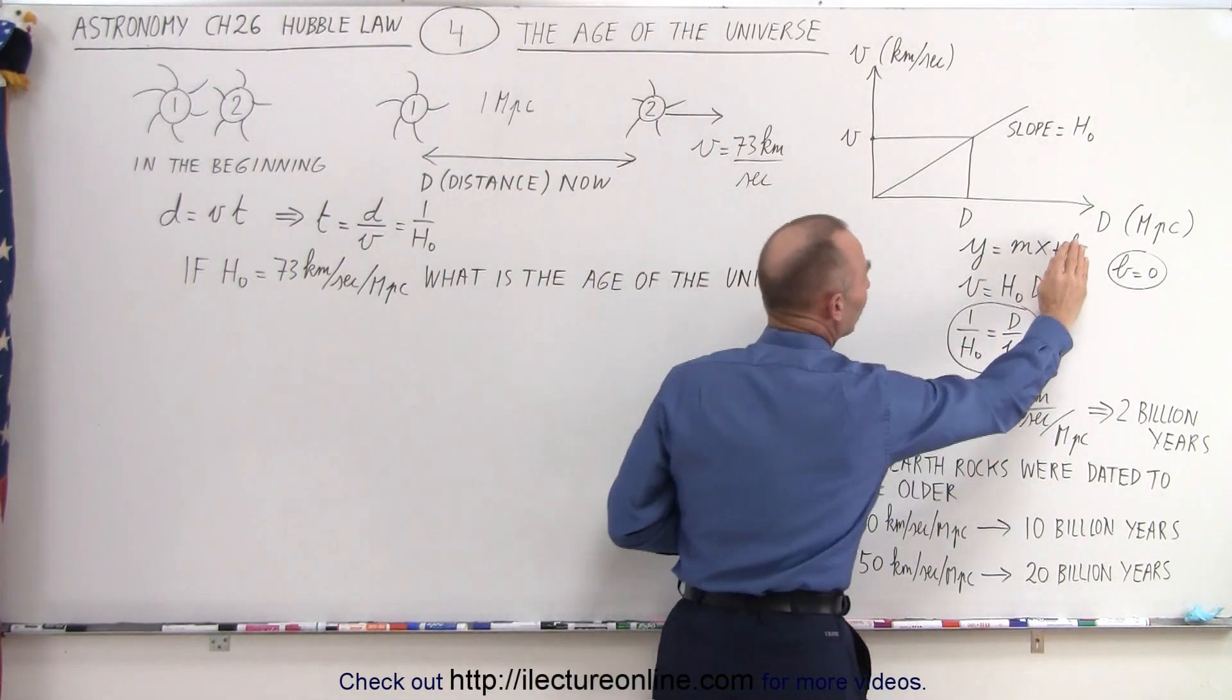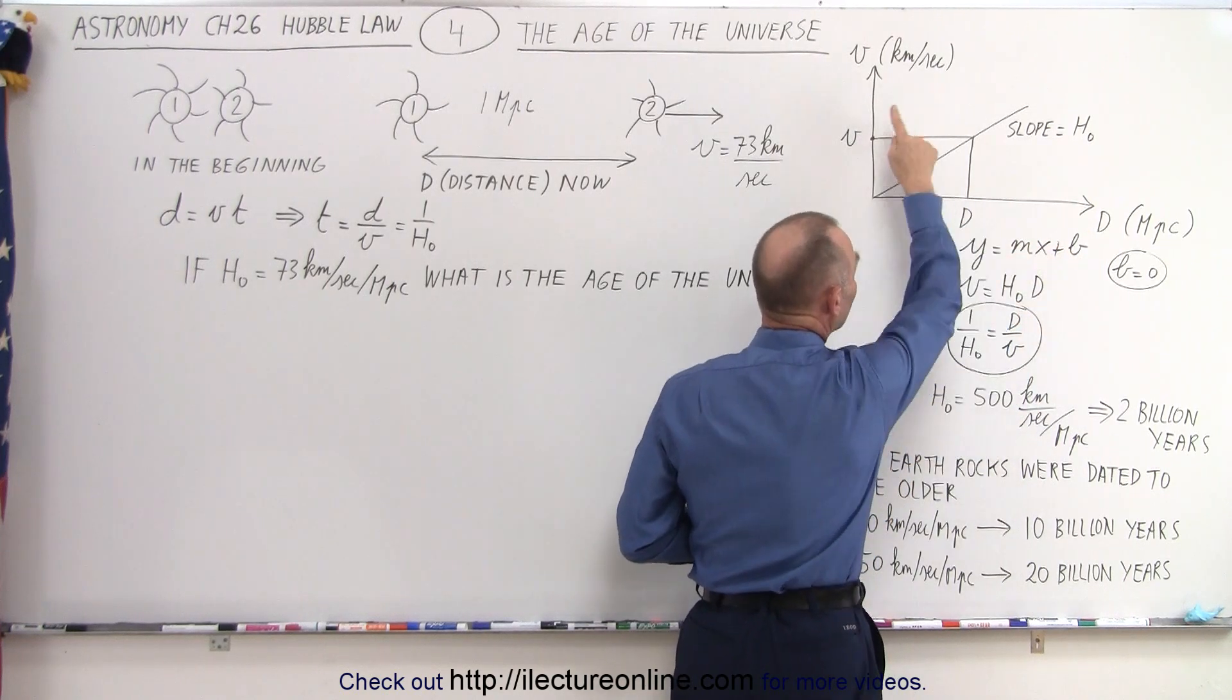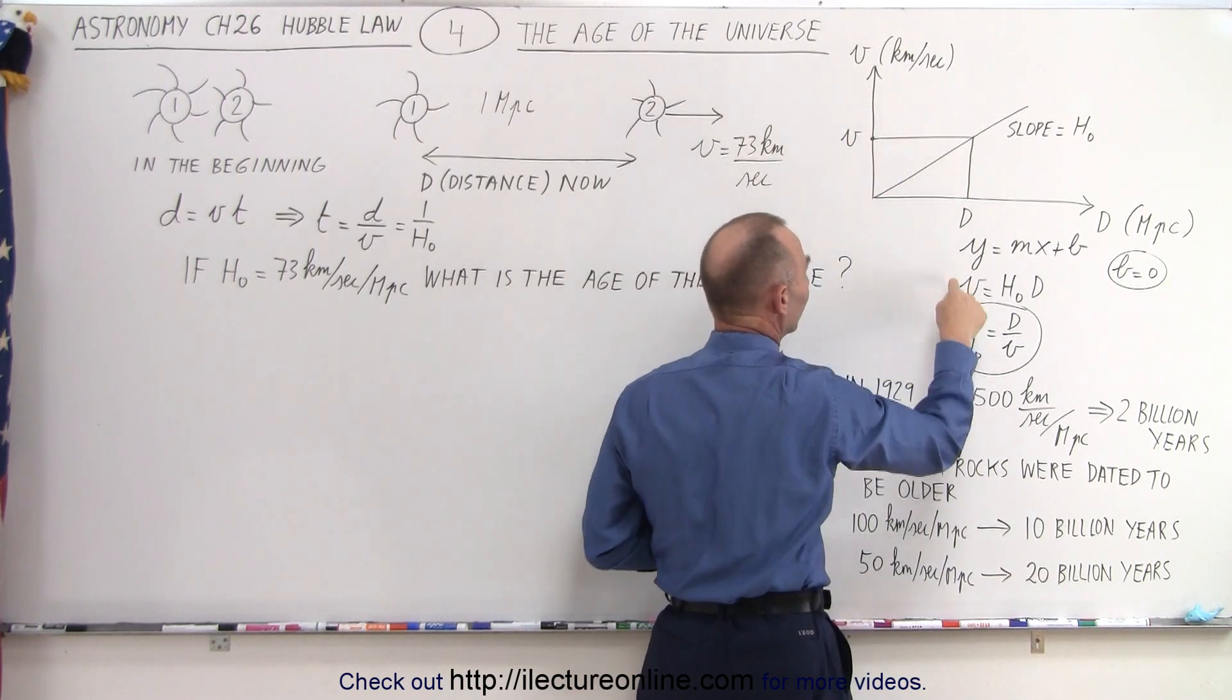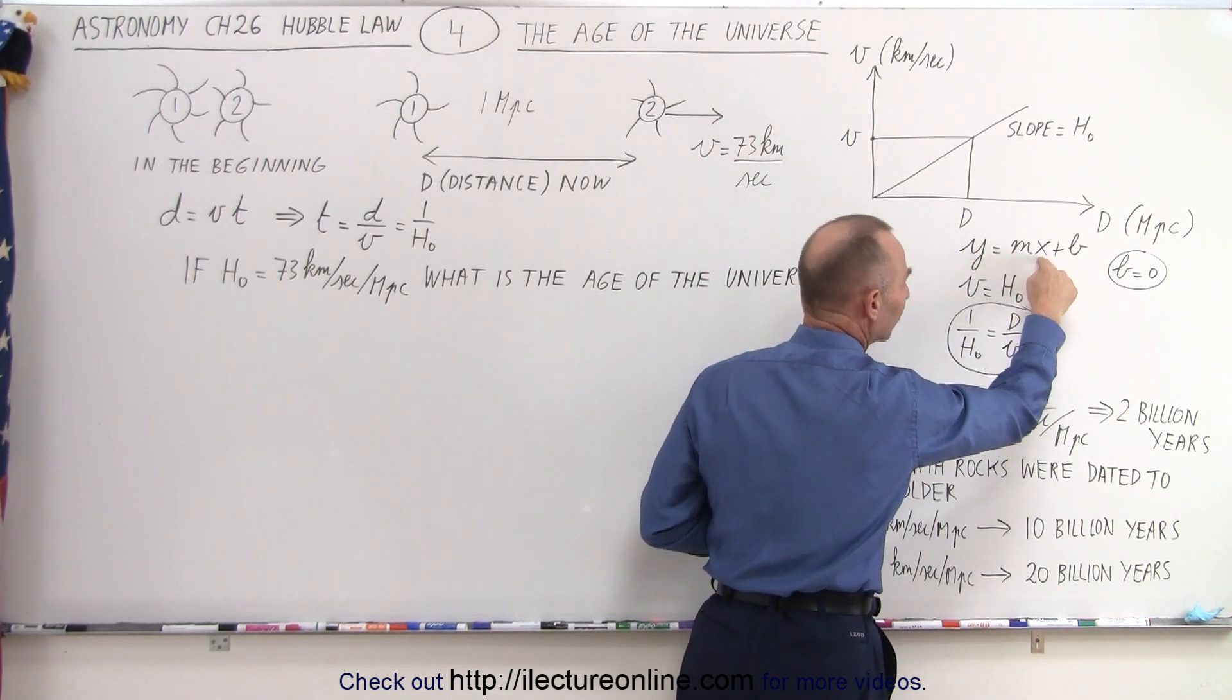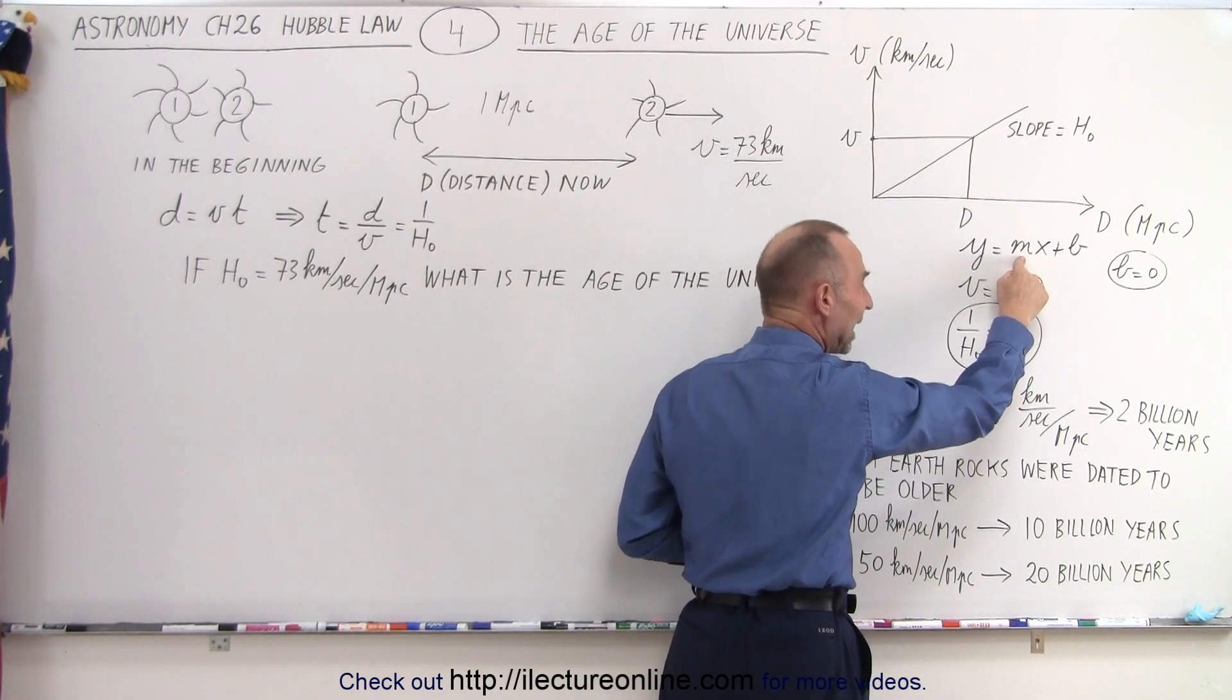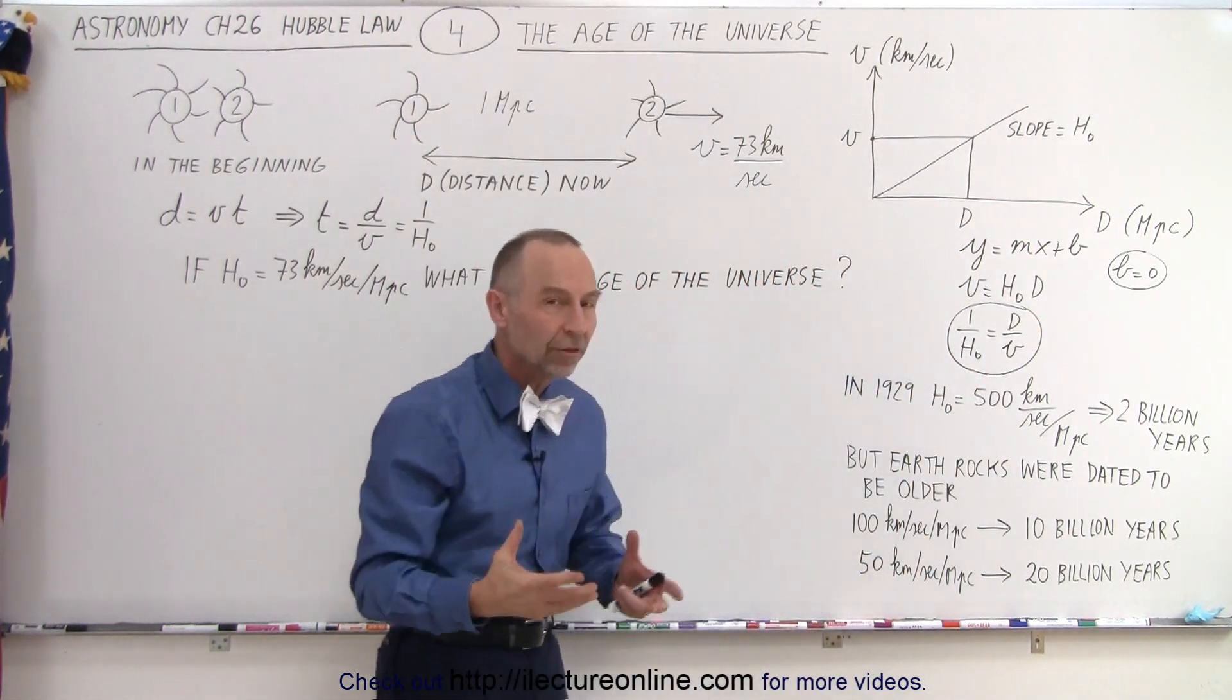Then we can see that the equation simply becomes y equals mx. If we compare that to the graph that we have over here, the vertical axis y becomes v and the horizontal axis x becomes d. And then the slope of the line, which is normally considered m in algebra, we now consider H₀, which means the Hubble constant.